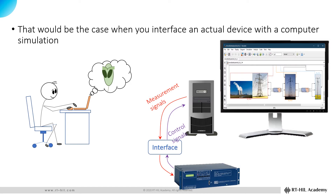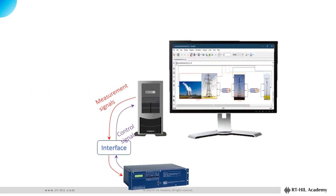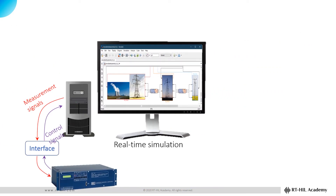In this example, the actual device — which might be, for example, a controller or a protection relay — represents you. Likewise, the computer simulation represents the UFO. The time progression for the device is ruled by real-time, whereas the time progression in the simulation is governed by the simulation engine, which can be either faster or slower than real-time. So, if we want the device to properly interact with the simulation, we should make sure that the simulation runs in real-time. This is where the real-time simulation is needed.